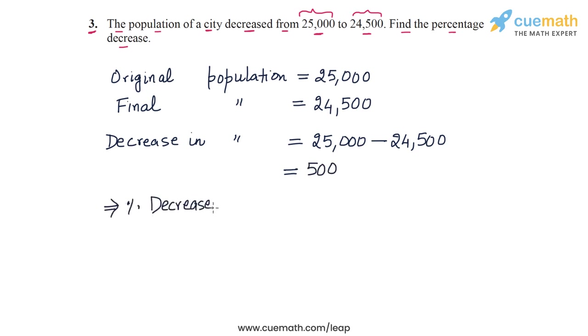Now we can find the percentage decrease in population easily. The percentage decrease in population will be the absolute value of the decrease divided by the original population, expressed as a percentage, so multiplied by 100. This will be the percentage decrease.